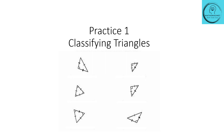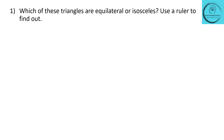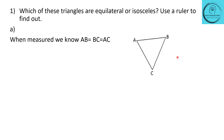We are going to start with practice 1: classifying triangles. Let's look at the first question: which of these triangles are equilateral or isosceles? Use a ruler to find out. They have given us triangle ABC. If we take a scale and measure the three sides AB, BC, and AC, we will find that they measure the same — AB equals BC equals AC. So when all three sides are the same, the triangle is called an equilateral triangle. Triangle ABC is an equilateral triangle.